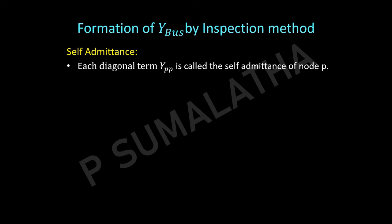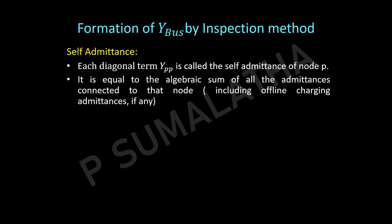The first point is that each diagonal term Y_PP is called the self admittance of node P. If it is Y11 it refers to the self admittance of node 1; if it is Y22 that refers to the self admittance of node 2. In general, P refers to any bus — first, second, or nth bus. The self admittance is obtained by taking the algebraic sum of the admittances connected to that particular node.